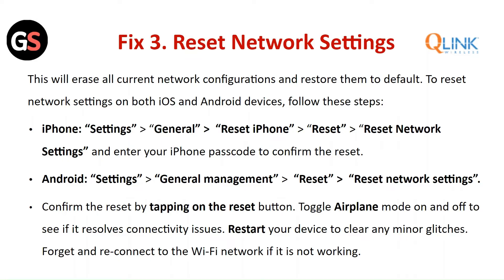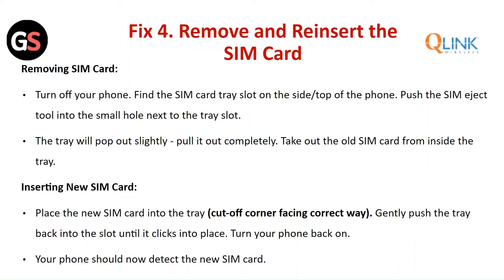Fix Four — Remove and Reinstall the SIM Card: turn off your phone and find the SIM card slot on the top or side of the phone. Push the SIM card eject tool into the small hole next to the tray slot; the tray will pop out slightly — pull it out completely and take out the SIM card. Place the new SIM card into the tray, gently push the tray back in until it clicks into place, then turn your phone back on. Your phone should now detect the SIM card.